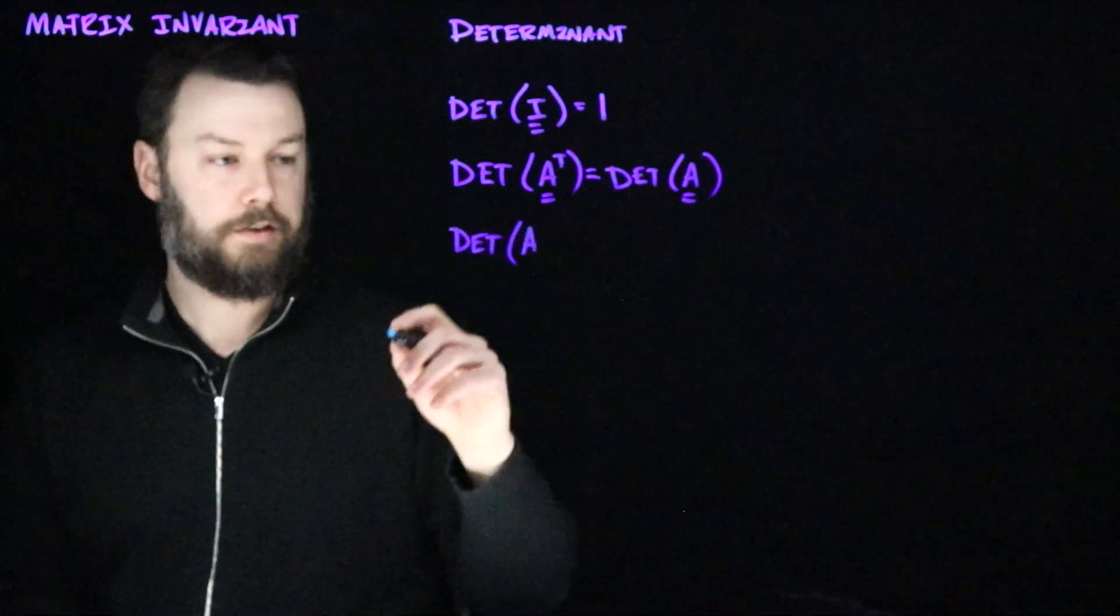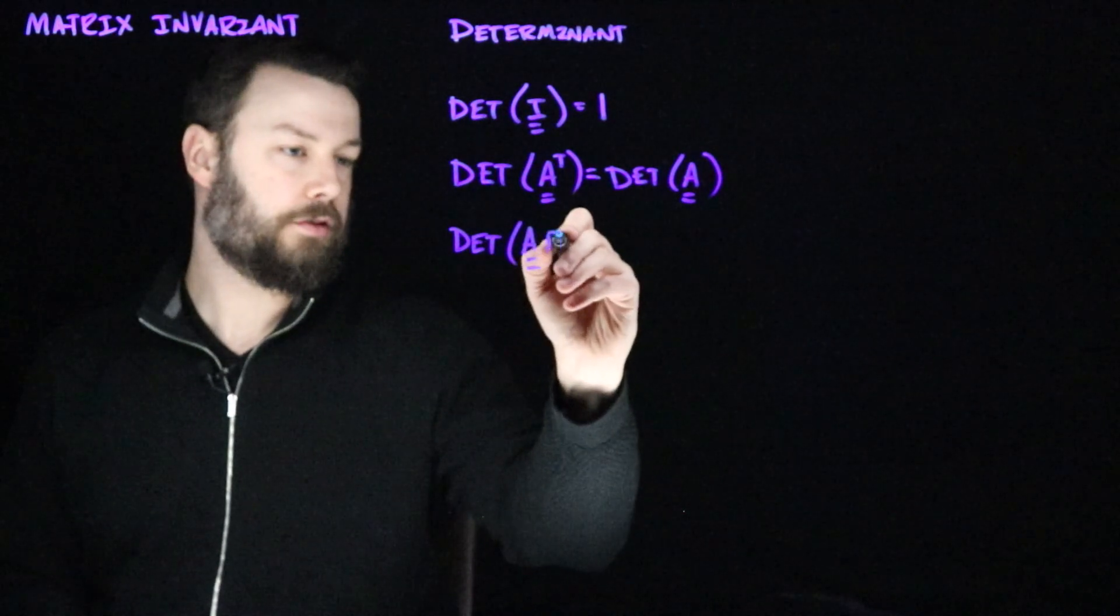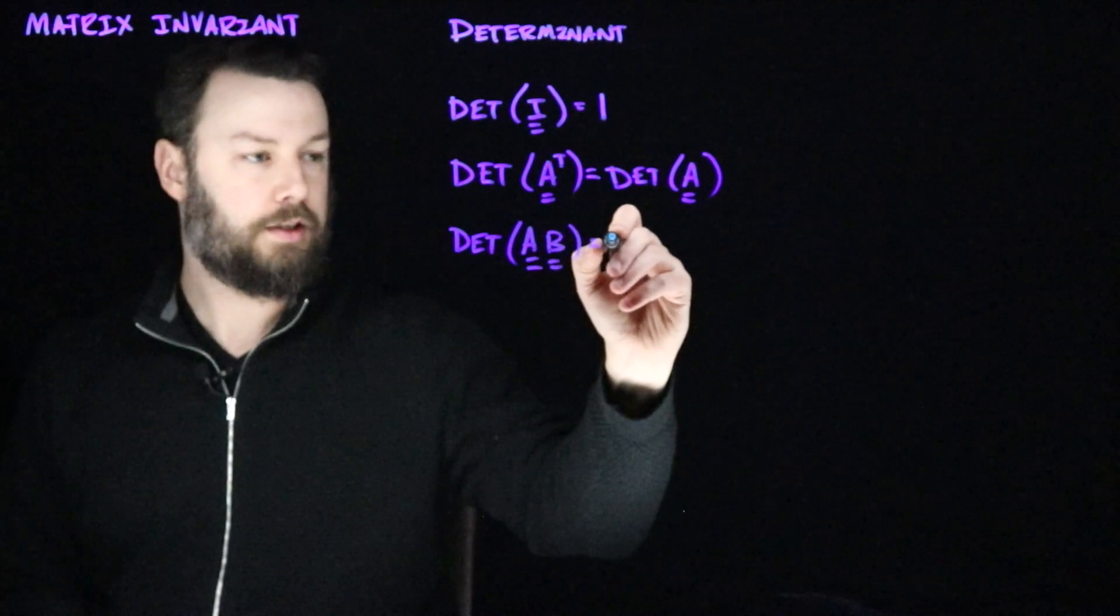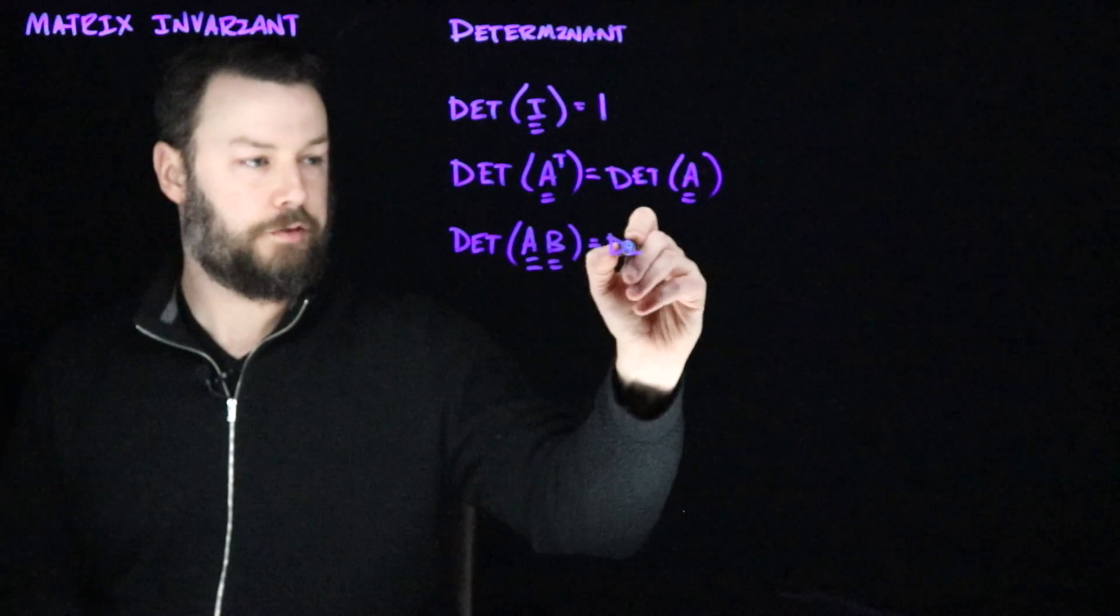Also, unlike the trace, if I take the determinant of the product of two matrices, then this is going to be equal to the product of the determinants.